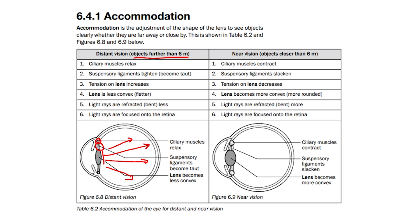When we are looking at near vision, it is objects that are closer than 6 meters. Therefore, the ciliary muscles contract and therefore get larger. This causes the suspensory ligaments to slacken, and the tension on the lens decreases.